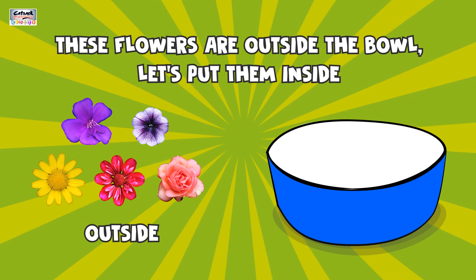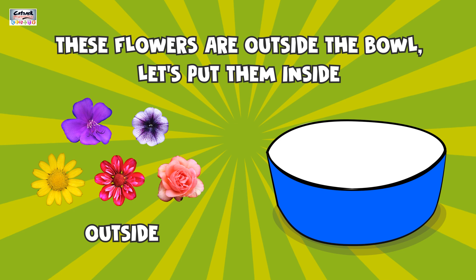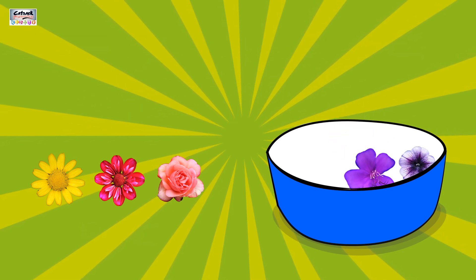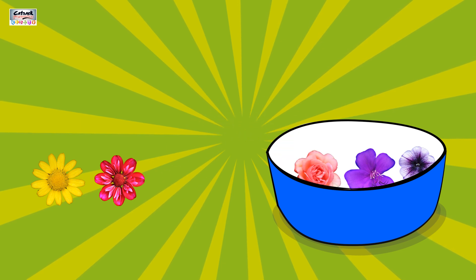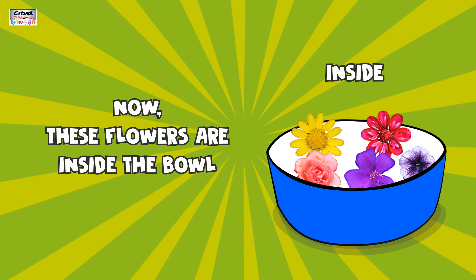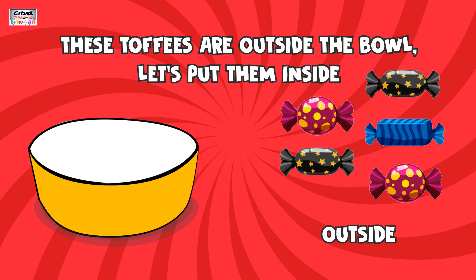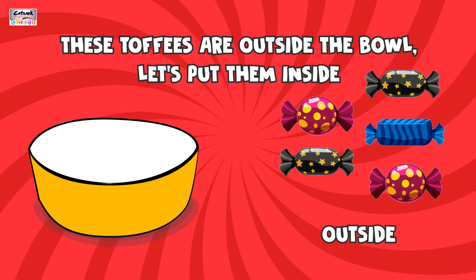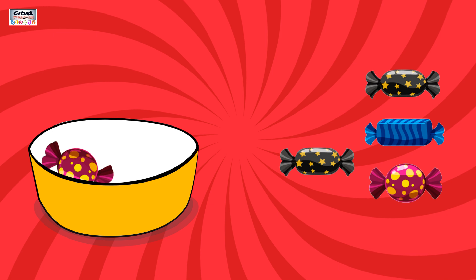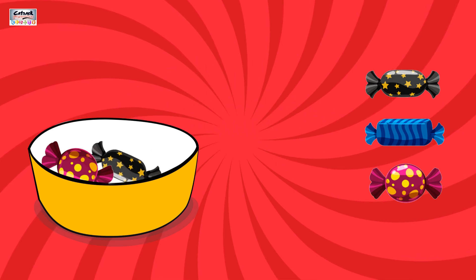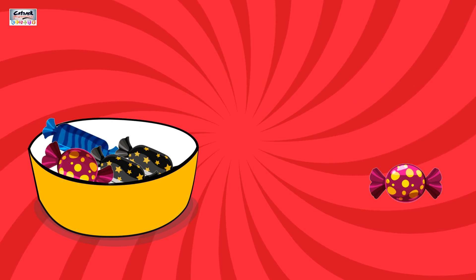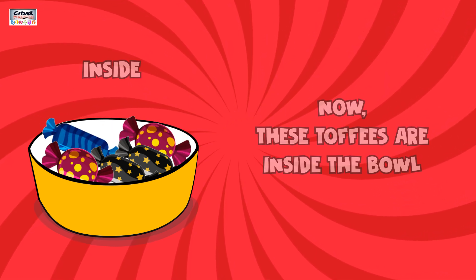These flowers are outside the bowl. Let's put them inside. 1, 2, 3, 4, 5. Now these flowers are inside the bowl. These toffees are outside the bowl. Let's put them inside the bowl. 1, 2, 3, 4, 5.